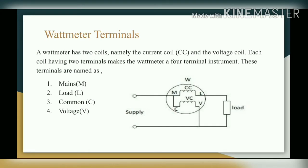Next is wattmeter terminals. A wattmeter has two coils: the current coil (CC) and the voltage coil. Each coil has two terminals, making the wattmeter a four-terminal instrument. The terminals are named Mains (M), Load (L), Common (C), and Voltage (V). M and L are the terminals of the current coil, and C and V are the terminals of the voltage coil.